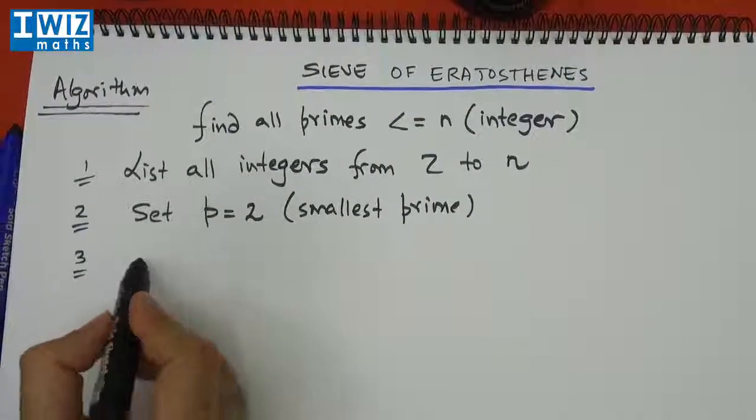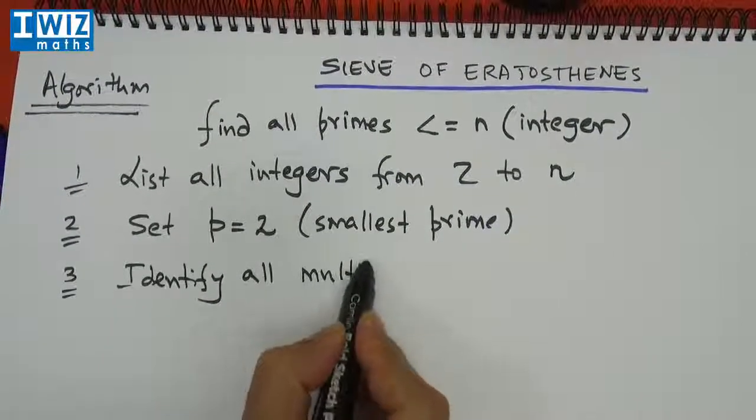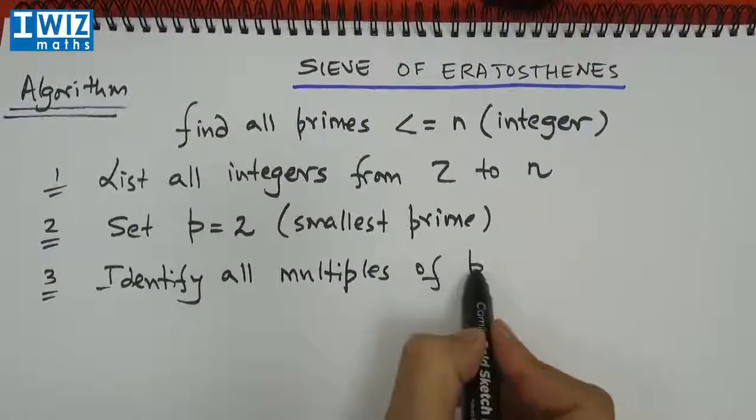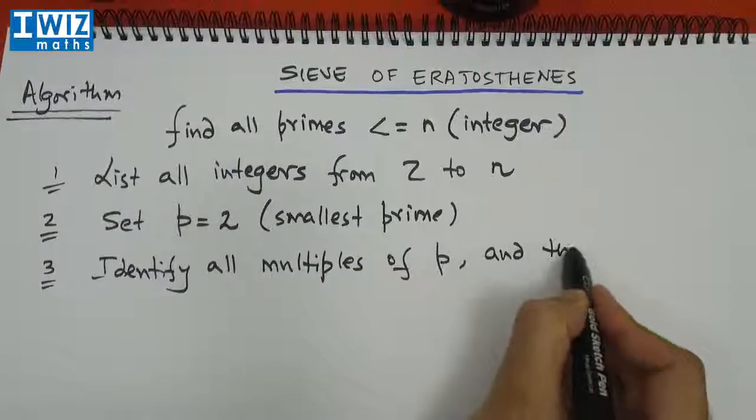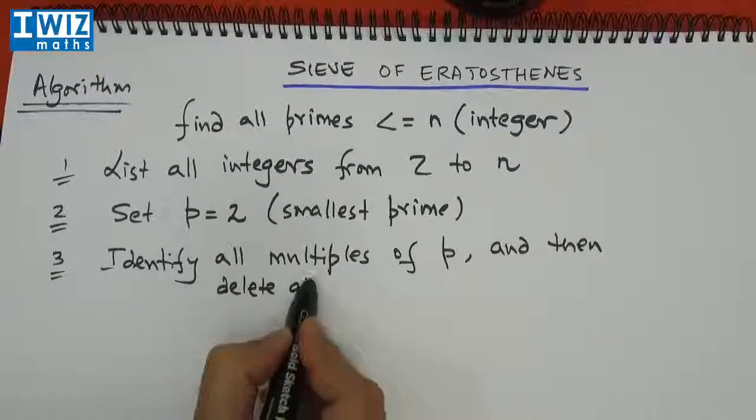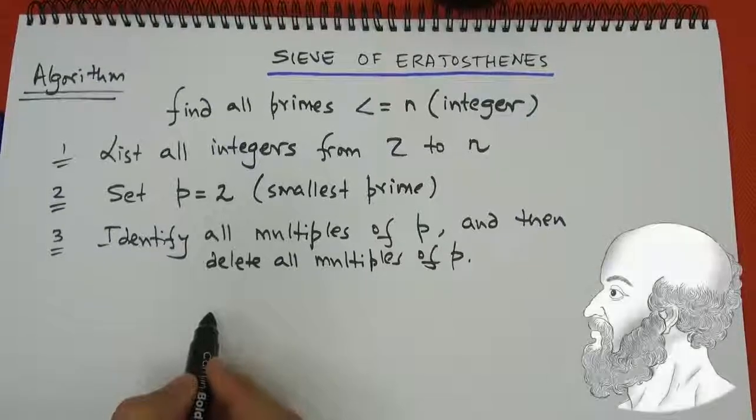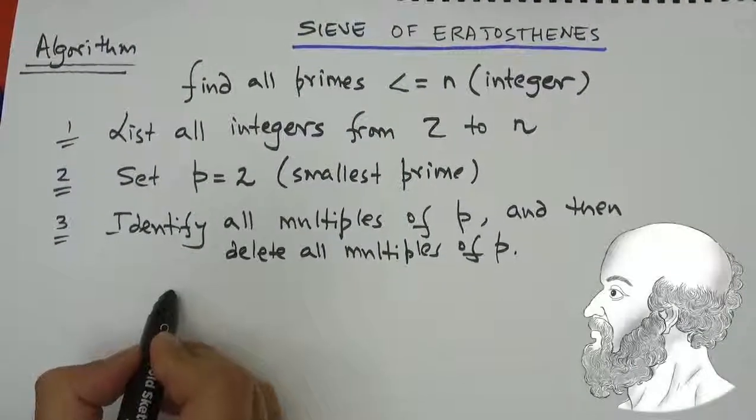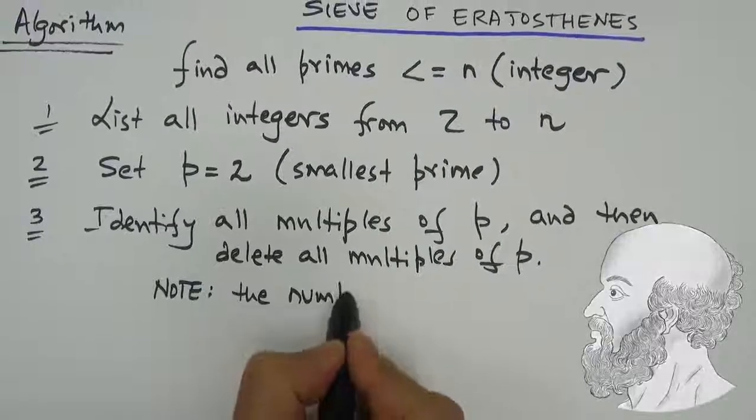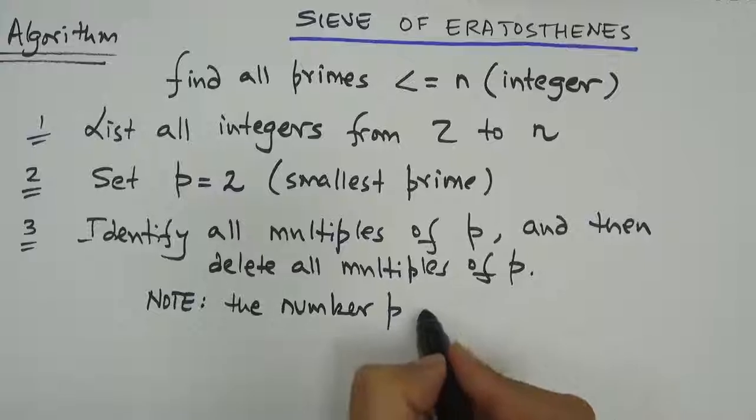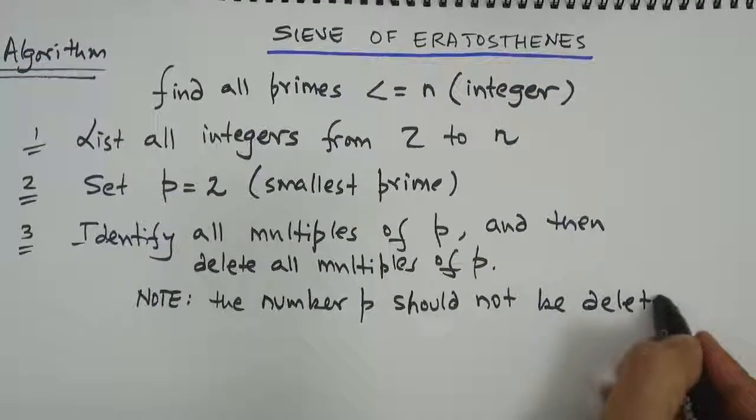Then what we do is we need to identify all multiples of p and then go ahead and delete all multiples of p. Now do note that the number p itself should not be deleted. That's an important point so let's write that down. Note that the number p itself should not be deleted.